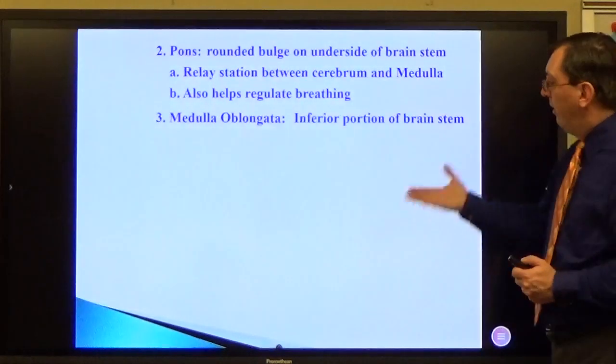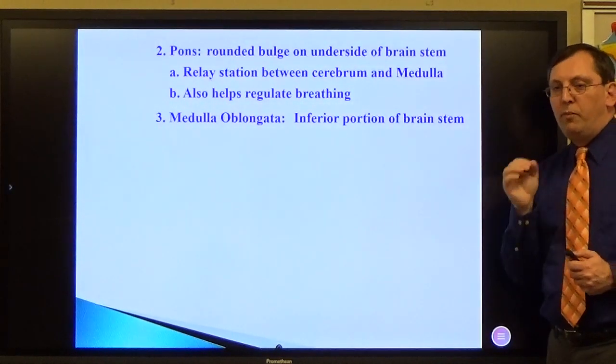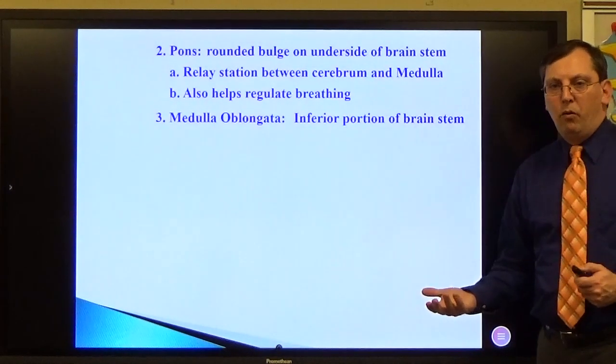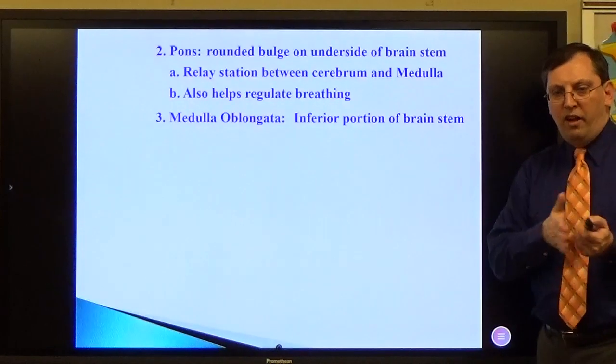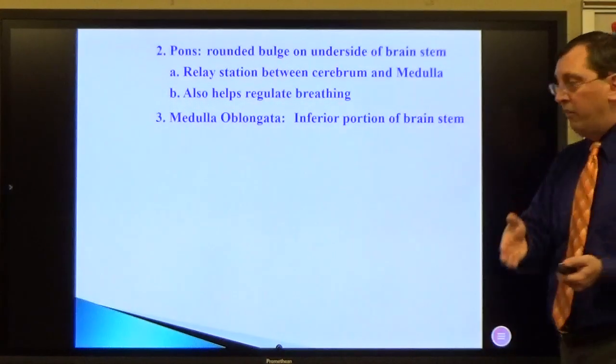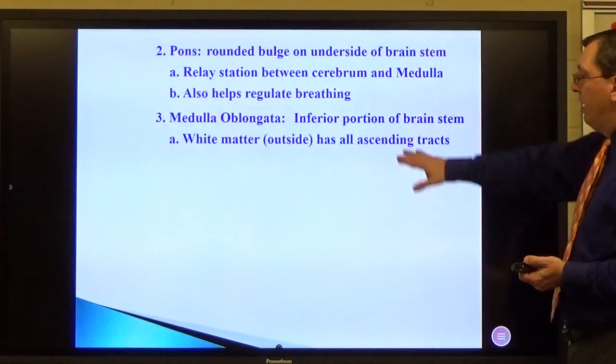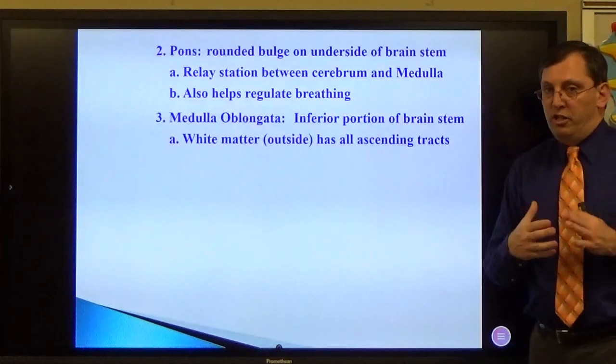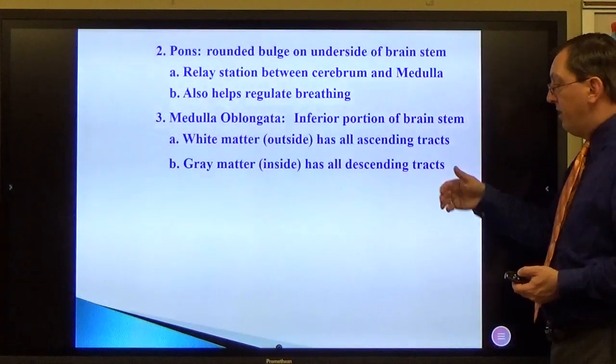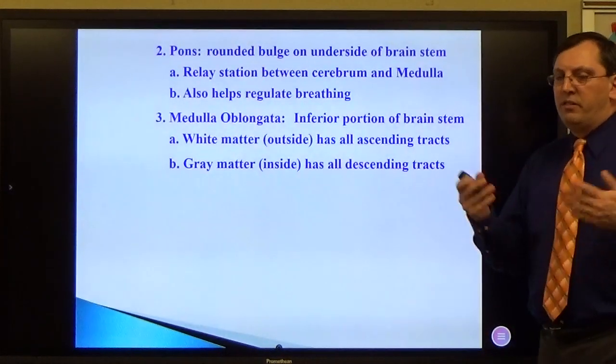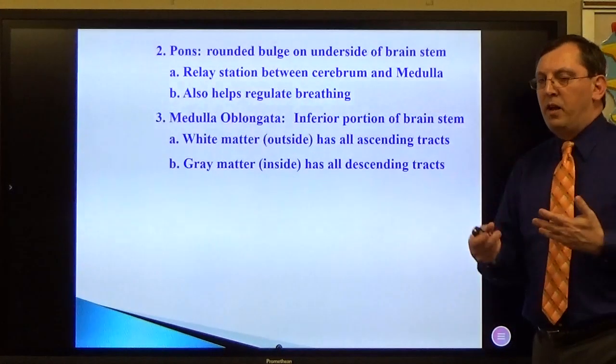Medulla oblongata. It's the final portion of the brain stem. Really, some people say it's just the spinal cord. They kind of run into each other. There's no one stop and one start kind of motion. They say, here's roughly the area it starts and here's where it stops. It's white matter on the outside, just like the spinal cord. It has all ascending tracts. And the gray matter on the inside has all descending tracts. So it's kind of similarly set up to the way the spinal cord is.